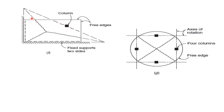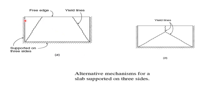For a circular slab supported only on columns with no support on the edges, draw straight lines connecting all columns — these are the lines of support. These lines intersect at points, and at each intersection the E-Line passes through the two axes of rotation. The E-Lines end at the circular boundary and do not extend further. For a slab supported on three sides, E-Lines can be drawn in either direction — both approaches are correct.